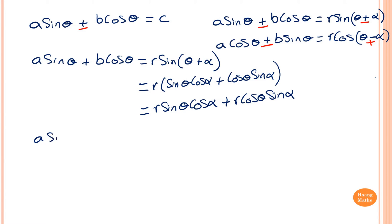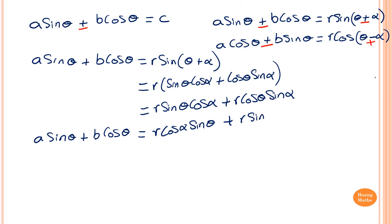So I write this out: a·sinθ + b·cosθ is equal to r·cosα·sinθ + r·sinα·cosθ. So let's compare the coefficient of sinθ. On the left-hand side we have a·sinθ, and on the right-hand side we have r·cosα·sinθ.